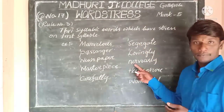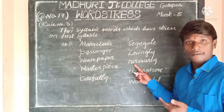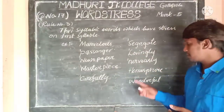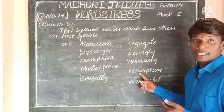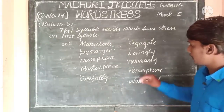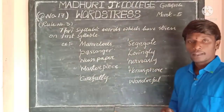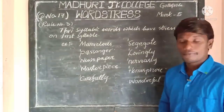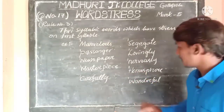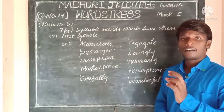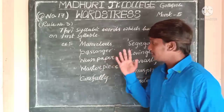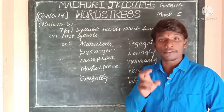Next is 'nervously' — NER-vous-ly — 3 syllables, so stress is on the first syllable. Next is 'hemisphere' — HEM-i-sphere — 3 syllables, so stress is on the first syllable. And 'wonderful' — WON-der-ful — stress is on the first syllable. This is all about rule 3. Rule 3 talks about only trisyllabic words, and all these trisyllabic words have stress on their first syllable.